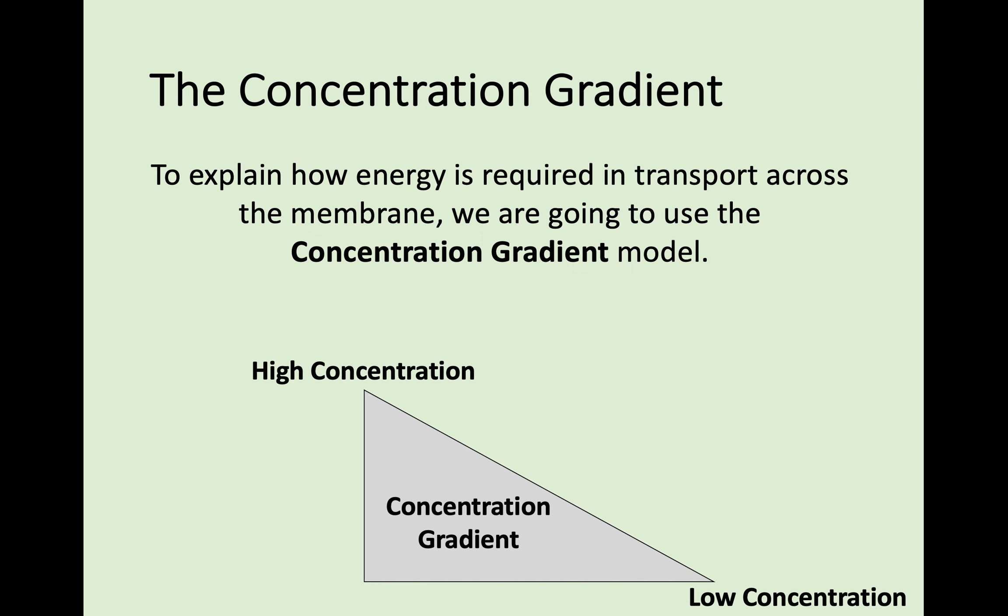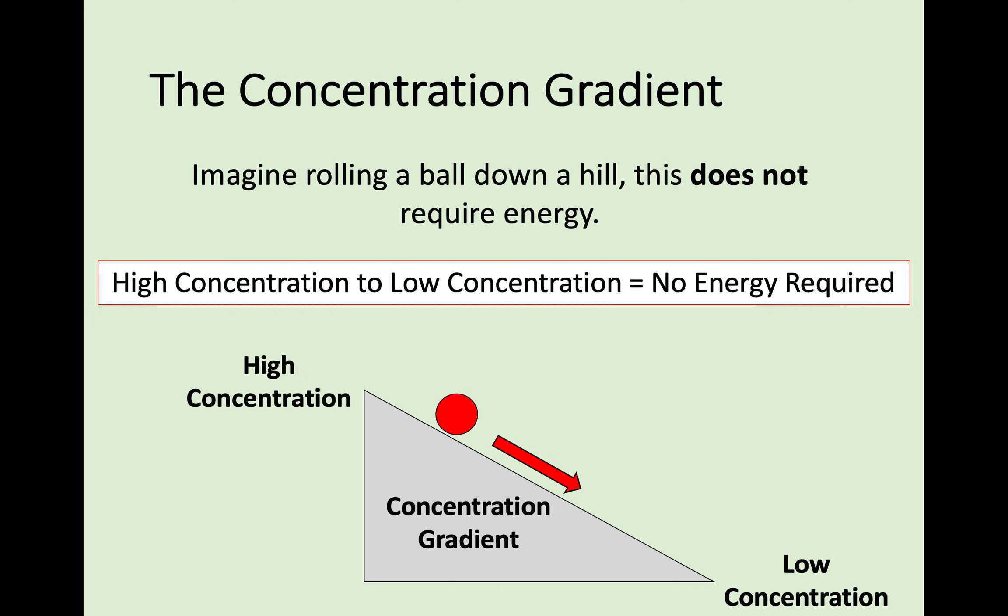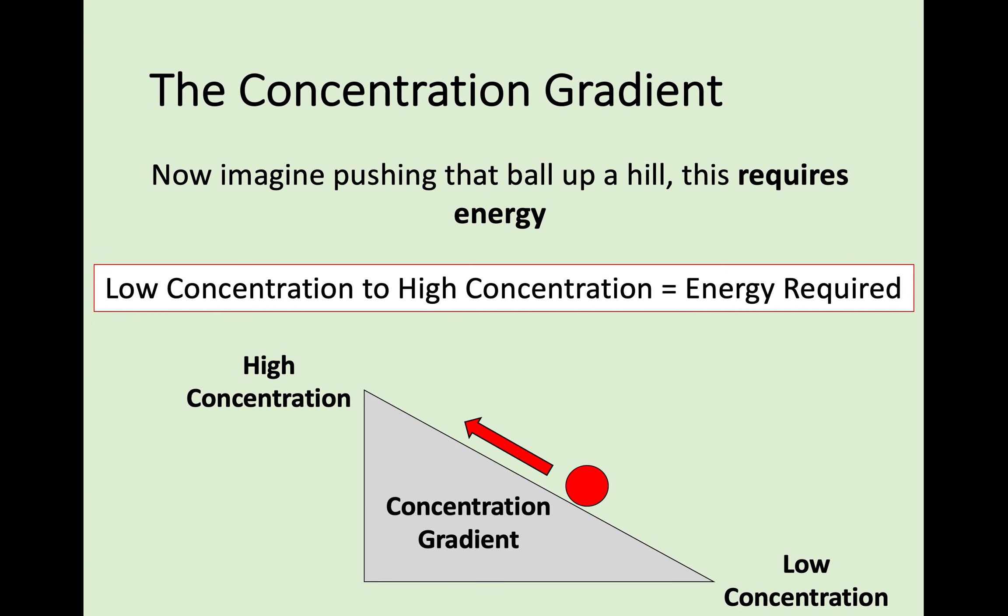To understand the process of diffusion, we look at the concentration gradient. Imagine a hill: at the top is a high concentration of a substance such as glucose, and at the bottom is a low concentration. Moving from high concentration down to low concentration doesn't require any energy — like rolling down a hill. However, moving from a low concentration to a high concentration requires energy, like moving up the slope. That is an active process.